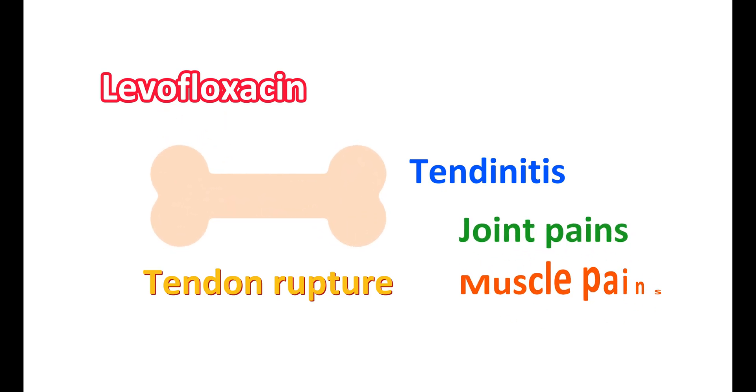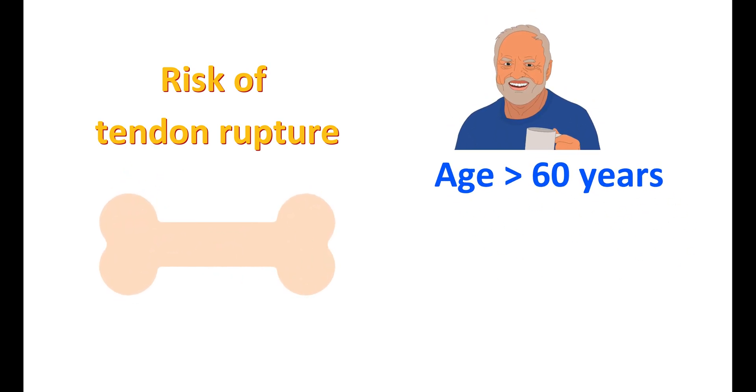Another important effect of this medication is on the bones. This medication can produce tendinitis, inflammation of the tendons which may result in tendon rupture. This may also be associated with joint pains and muscle pains. The risk of tendon rupture is more pronounced in elders with ages above 60 years.